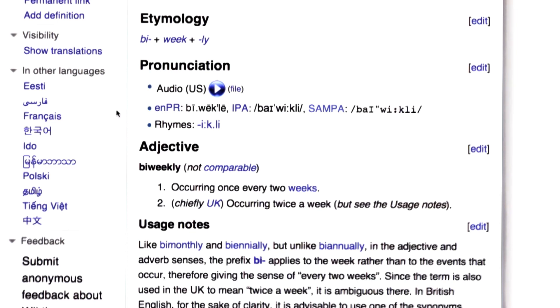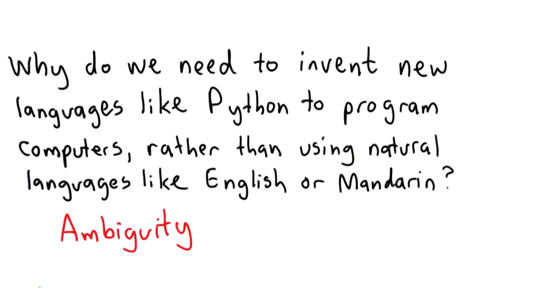This is a pretty big problem. If we wrote a computer program doing our payroll and it had to decide what it meant to pay someone biweekly, we'd want to make sure it understood that the same way the programmer did. That's one important reason why we need to invent new languages like Python to program computers, rather than using natural languages we already speak — because there are lots of things that different people will understand in different ways, both at the granularity of individual words like biweekly, and in complete sentences.